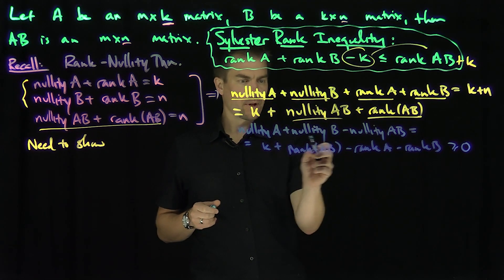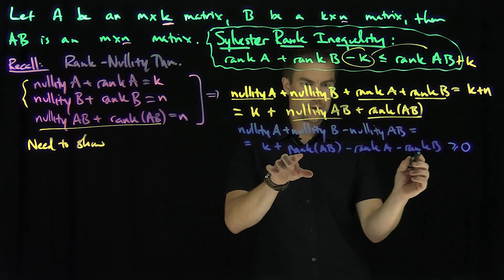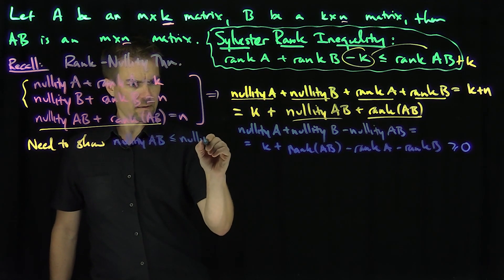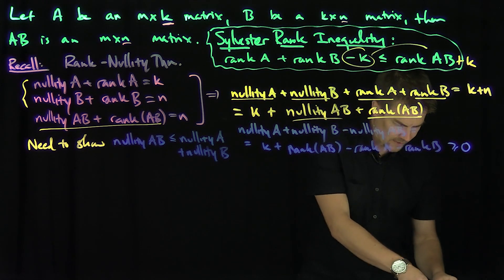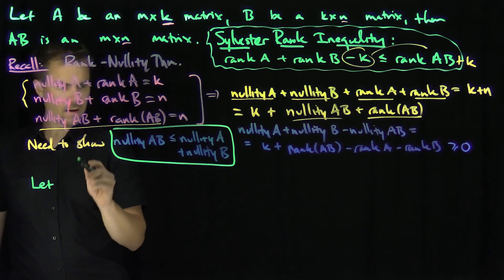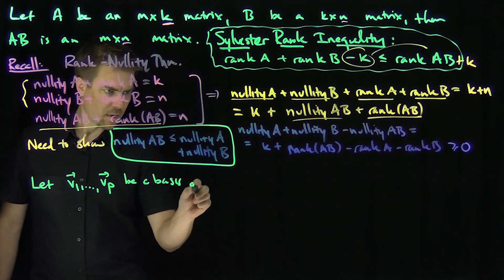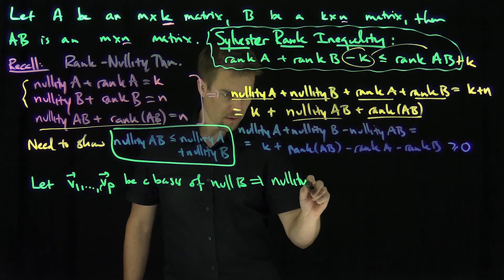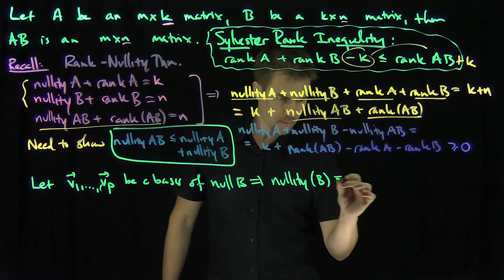So we need to show that nullity of AB is less than or equal to nullity of A plus nullity of B. To do this, let v1 through vp be a basis of the null space of B. In other words, the nullity of B equals p.